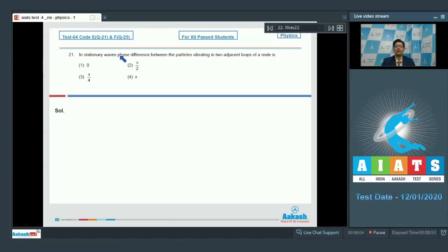Question number 21 says, in stationary wave, phase difference between the particles vibrating in two adjacent loops of a node is? Dear students, let us draw a diagram of the stationary wave.